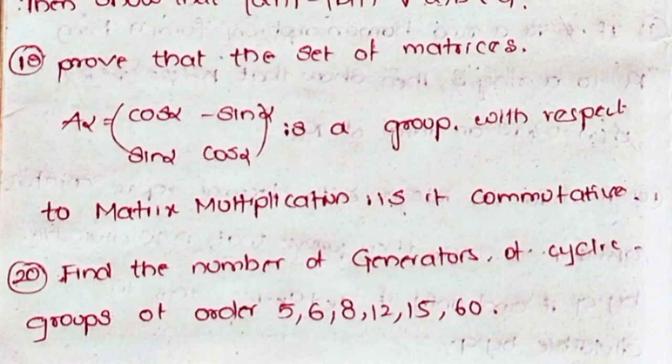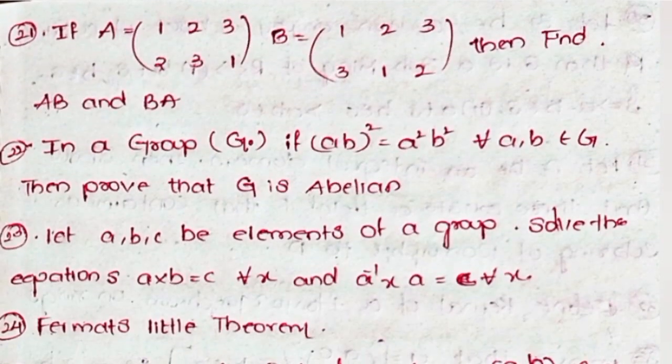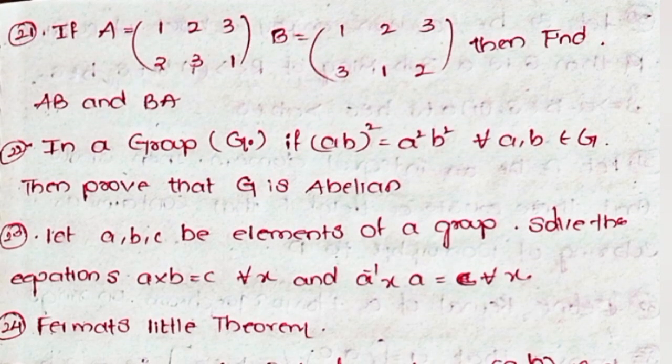Twenty, find the number of generators of cyclic groups of order 5, 6, 8, 12, 15, and 60. Twenty-one, if A = (1 2 3 / 2 3 1) and B = (1 2 3 / 3 1 2), then find AB and BA.